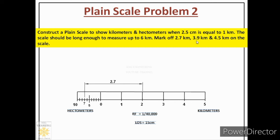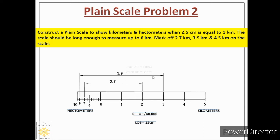Next dimension is 3.9 kilometers, meaning 3 kilometers and 9 hectometers. From 0 to 3 we pick 3 kilometers. Then from 0 we go to the 9th hectometer division, label 9 below, draw the dimension line, and from that draw an extension line. Leaving a 10 millimeter gap, we draw the second dimension line with closed filled arrowheads and write the value 3.9.